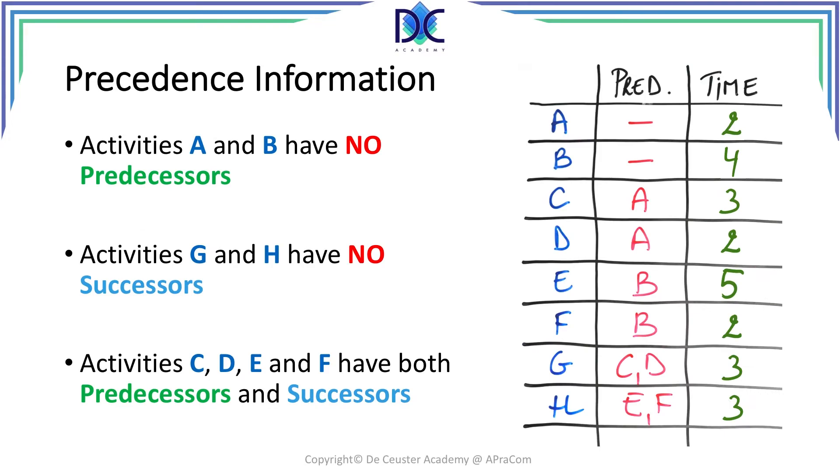So let's have a look at the precedence information. It is typically represented in a table like you see at the right. We have in the first column the task identifiers, in our case just letters of the alphabet. Then we have the information about the predecessors, and the last column in our example is the time, the duration of those activities.